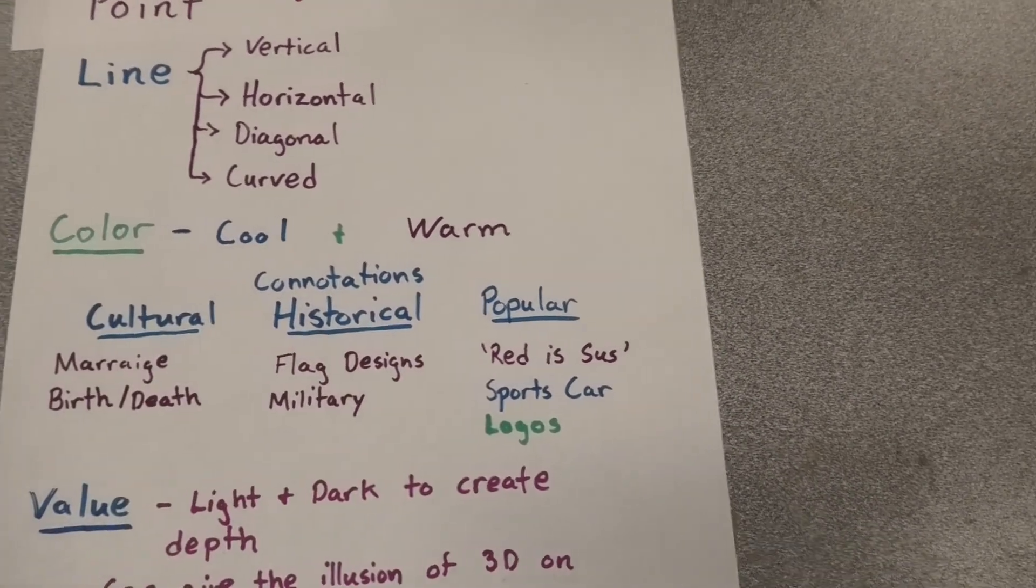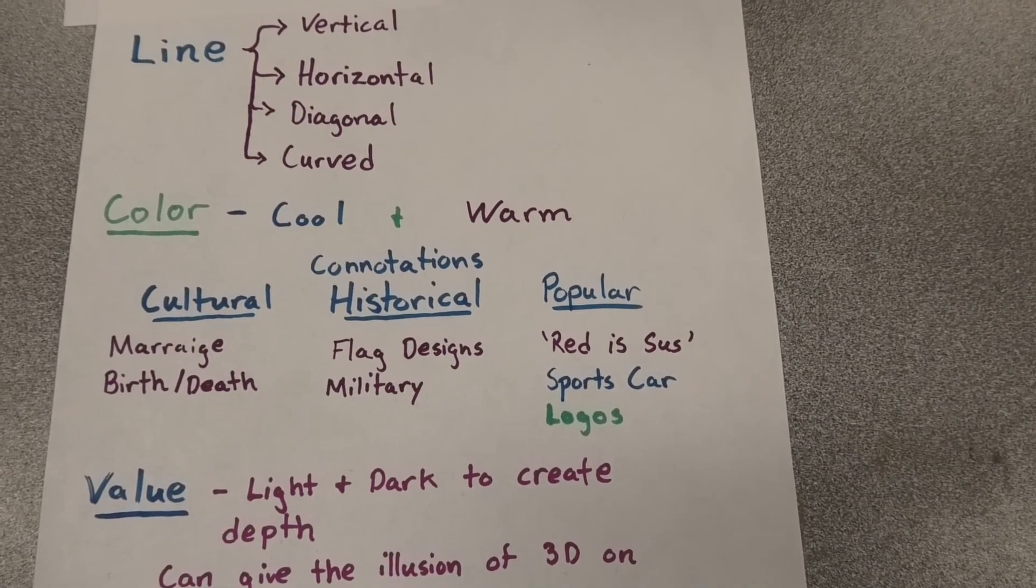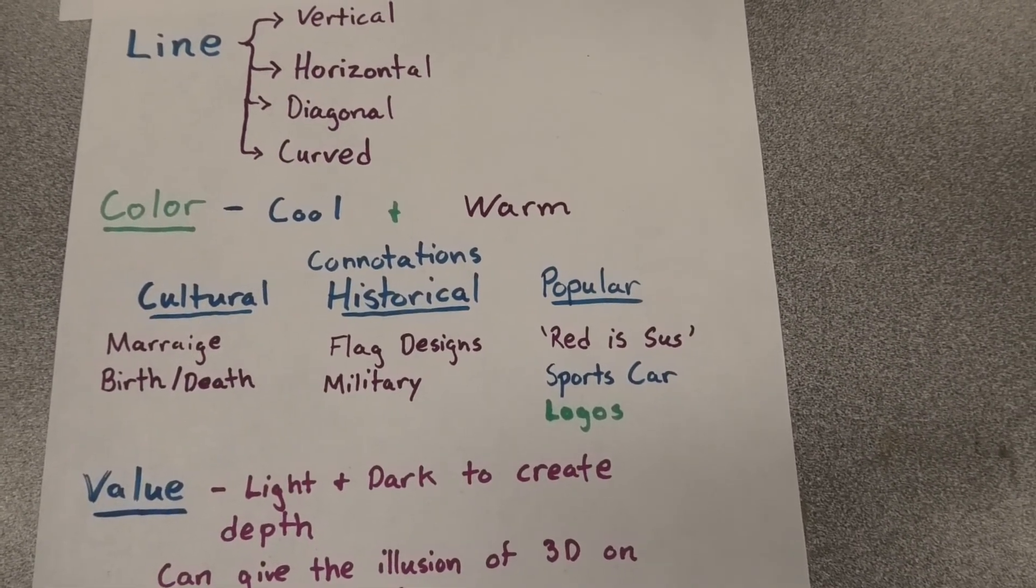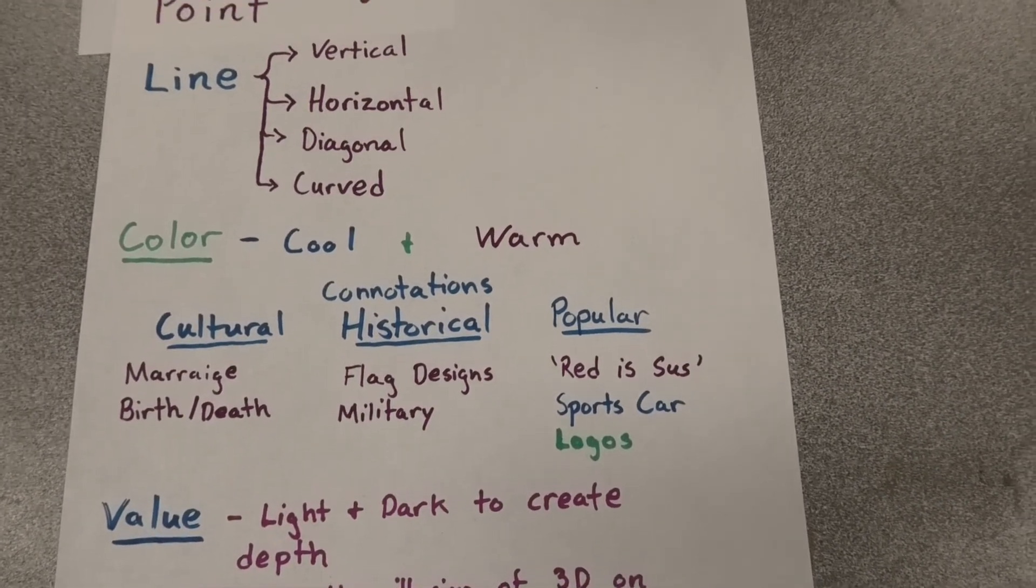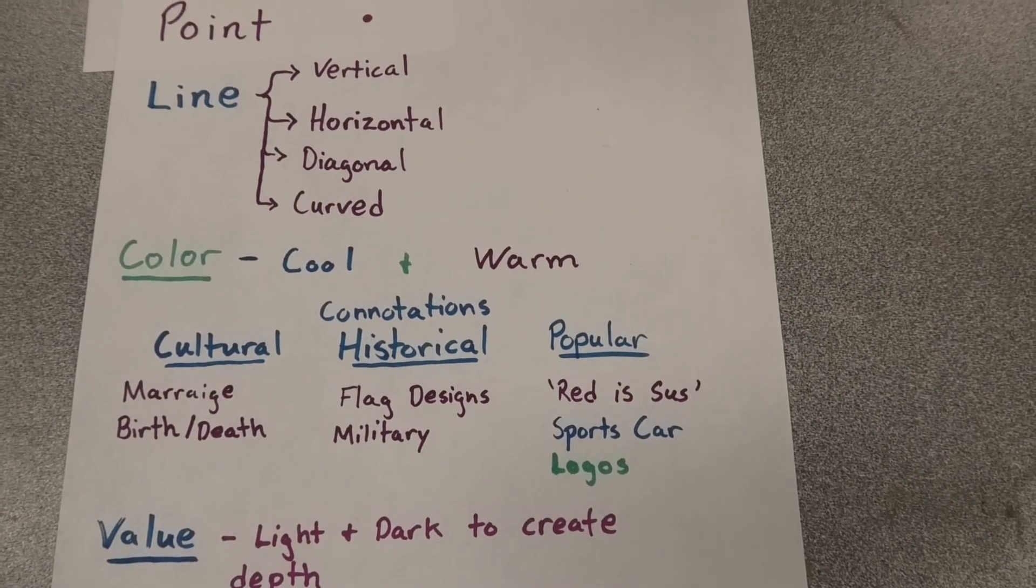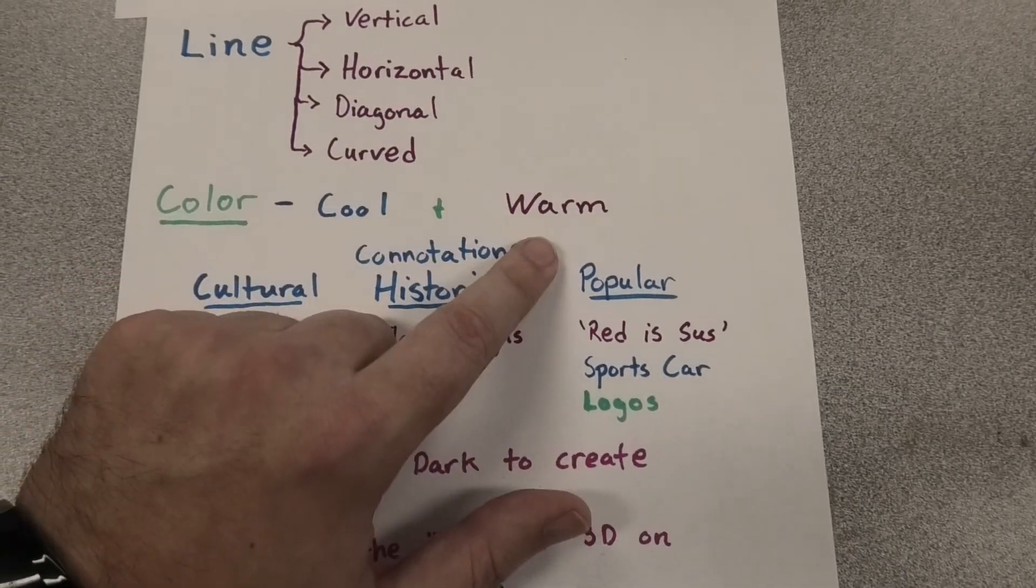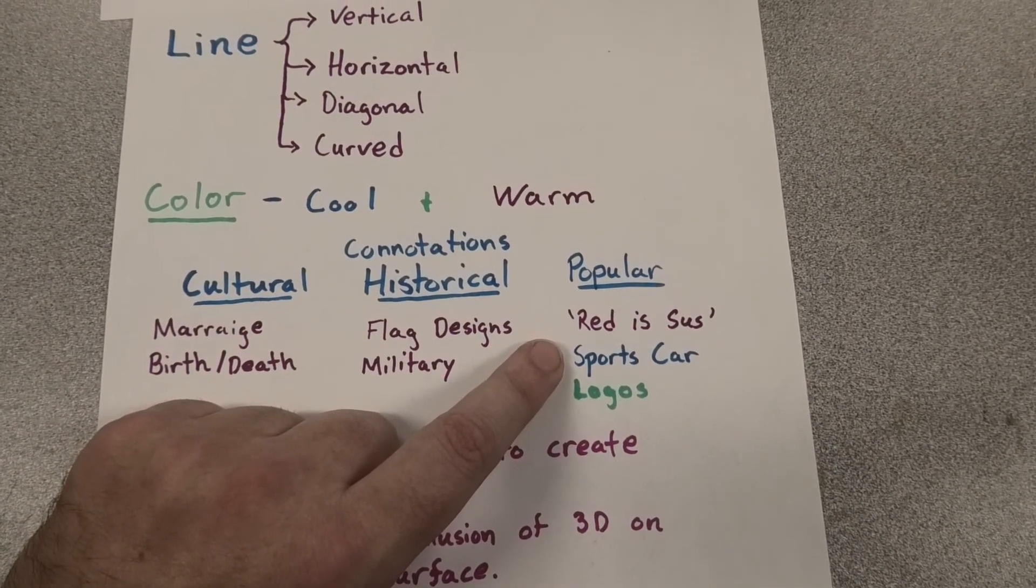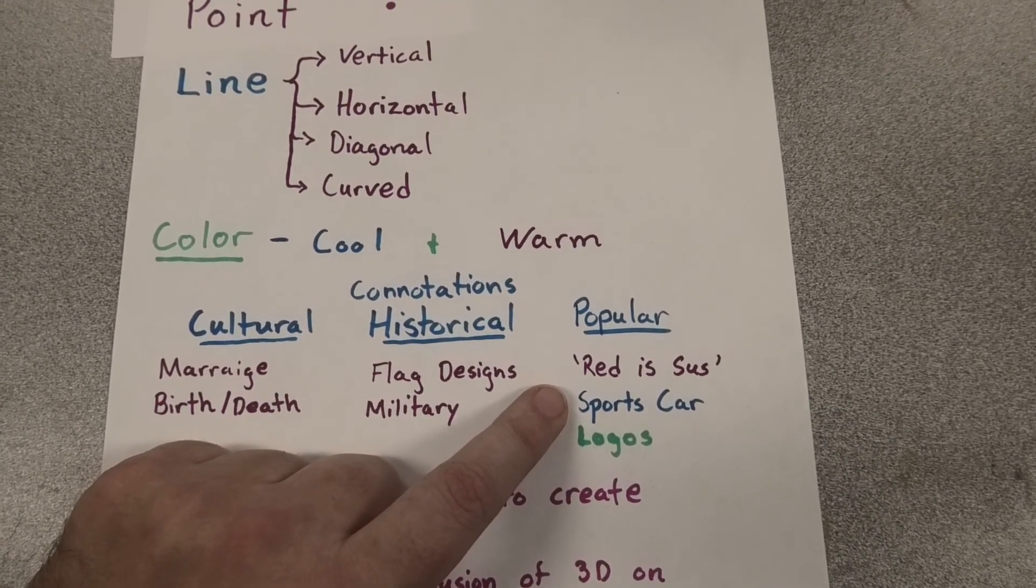There are also definitely popular connotations of color as well. So for video games and like the Among Us craze that's going on in 2020, a lot of people say red is sus, and that's usually if you look at an Among Us game, the color scheme red usually gets kicked out more often statistically, and that might actually just be because of our interpretations of colors. If you normally think of a sports car, normally in your mental image that you get, it's normally going to be some kind of aggressive color in your mind.